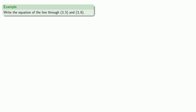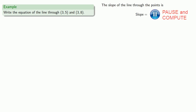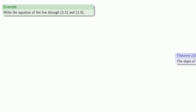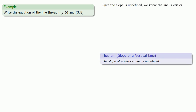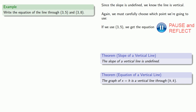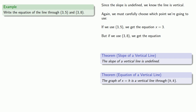Let's write the equation of a line where the denominator of the slope is 0, making the slope undefined. Since we can't use point-slope form, we consider what we know: vertical lines have undefined slope. The graph of x equals h is a vertical line through h, k. Using either point (3, 5) or (3, 8), we get the equation x equals 3.